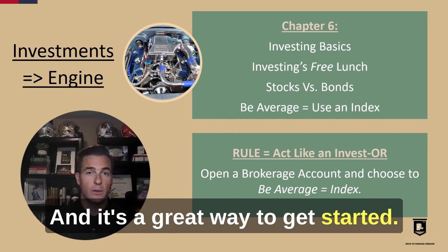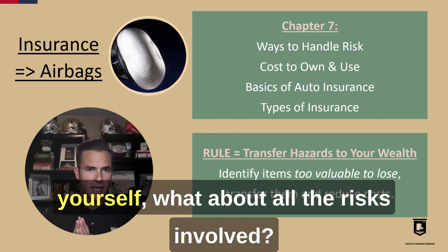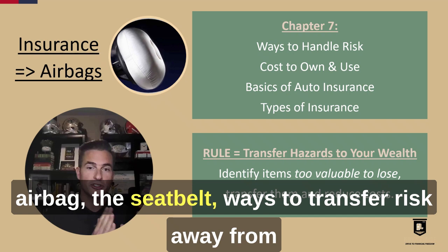The engine is starting to go. You're moving faster and faster. And you ask yourself: what about all the risks involved? This is where Chapter 7 introduces the airbag, the seatbelt — ways to transfer risk away from you — and that is going to be our introduction to insurance. We walk through the cost to own in a premium and the cost to use in a deductible.